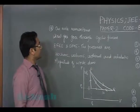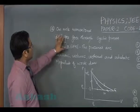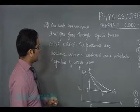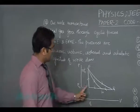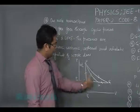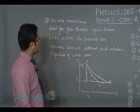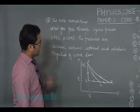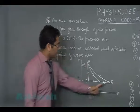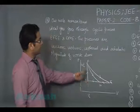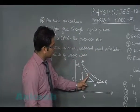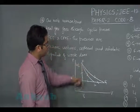Alright, let's go to question number 18, which says one mole monoatomic ideal gas goes through cyclic process EFGE. The processes are isochoric, this has to be isochoric, isobaric, this has to be isobaric, isothermal and adiabatic. So this has to be isothermal and this adiabatic because the slope magnitude is greater.